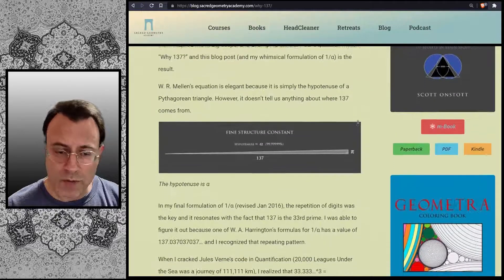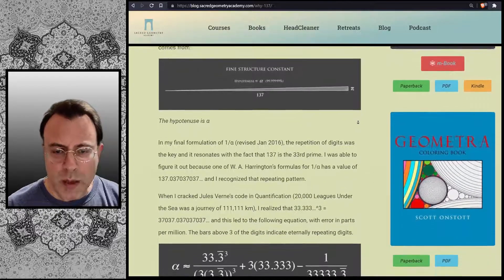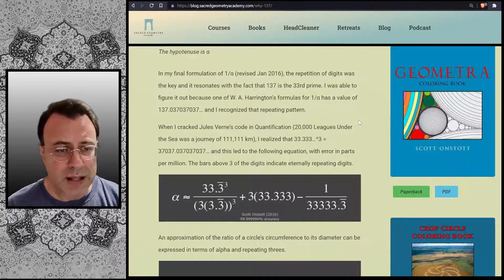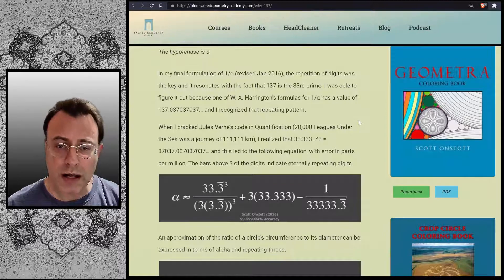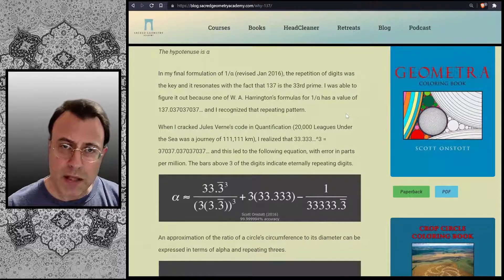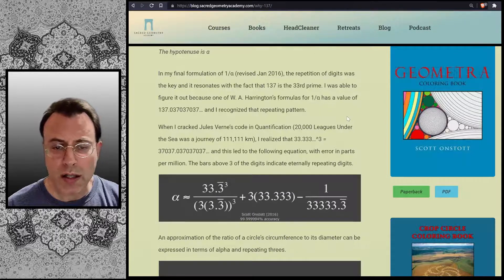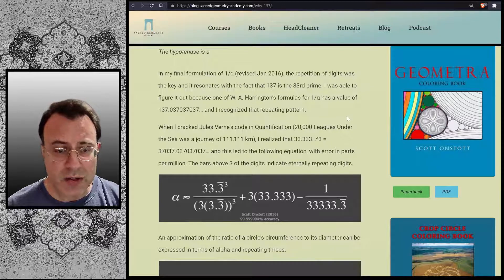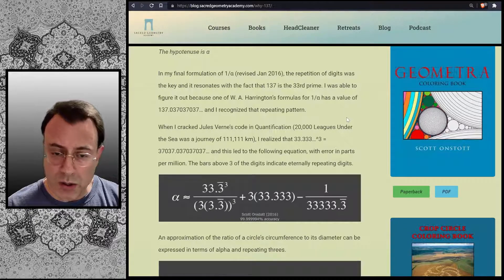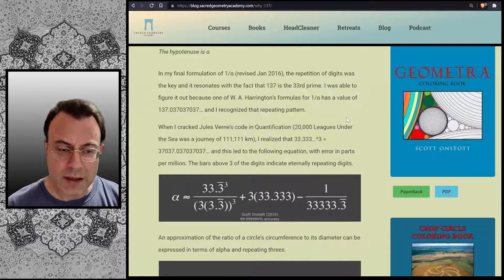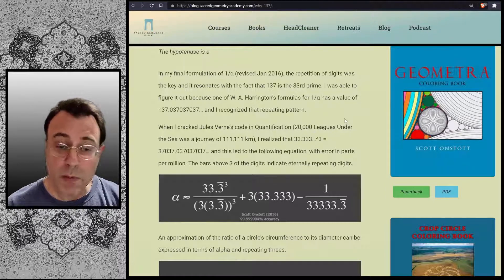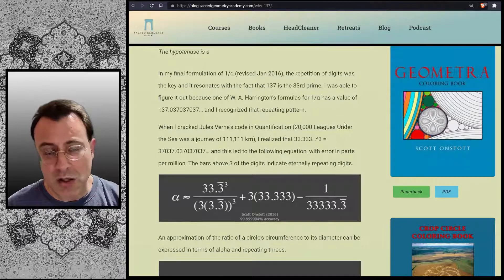In my final formulation for 1 over alpha, which was revised in January 2016, the repetition of digits was the key, and it resonates with the fact that 137 is the 33rd prime. I was able to figure it out because one of W.A. Harrington's formulas for 1 over alpha has a value of 137.037037... and I recognized that repeating pattern. When I cracked Jules Verne's code in Quantification for 20,000 Leagues Under the Sea was a journey of 111,111 kilometers, I realized that 33.333 cubed is equal to 37037.037037... And this led to the following equation with error in parts per million. The bars above 3 of the digits indicate eternally repeating digits.